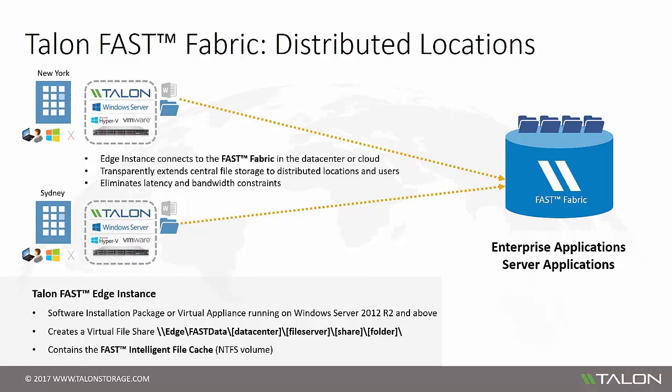Each Fast Edge instance maintains its own unique intelligent file cache, which means all centralized data is available to you, but only caches what's actively used by users in the branch office. This NTFS volume keeps the active dataset close to the users for immediate access to their important files and projects. Because of the integration with the NTFS file system, the cache is simple to manage and can quickly be scaled up to meet the needs of a growing distributed office.